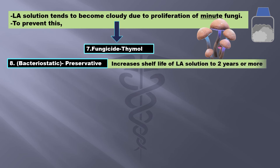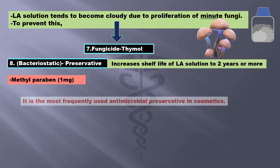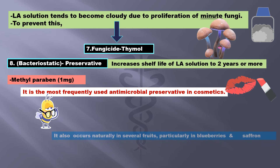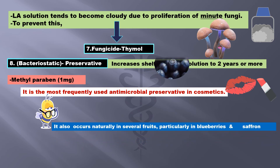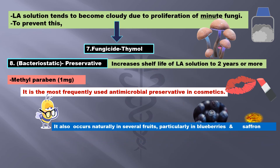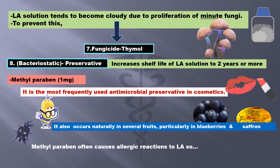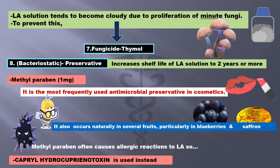A preservative increases the shelf life to 2 years or more, and 1 mg of methylparaben is used for the same. In fact, it is the most frequently used antimicrobial preservative in cosmetics, and it also occurs naturally in several fruits, particularly blueberry and saffron. However, methylparaben often causes allergic reactions to LA, so caprylhydroxyquinoline is used instead.